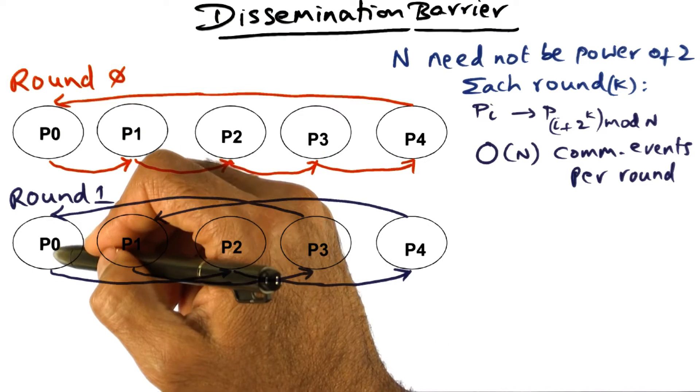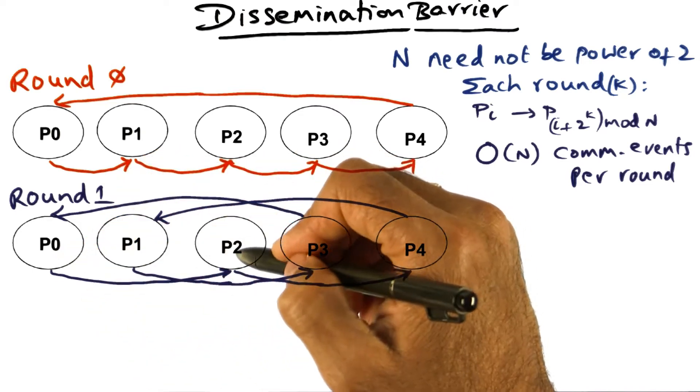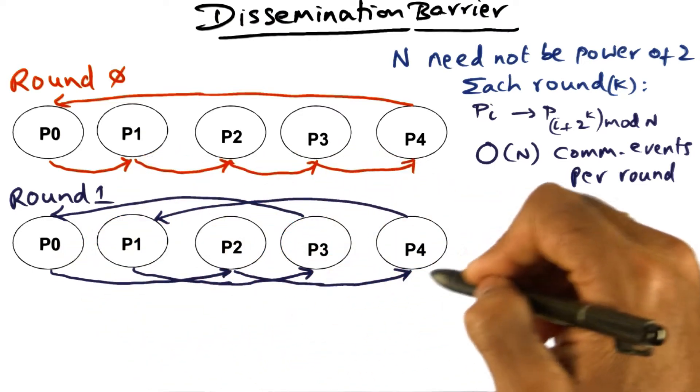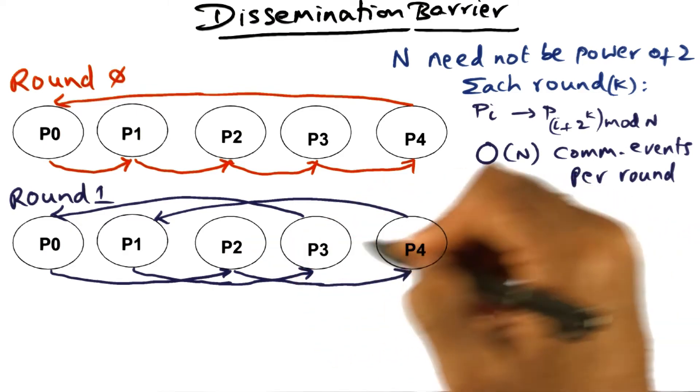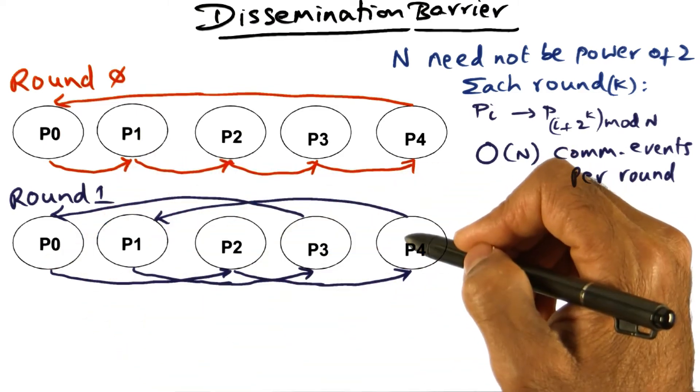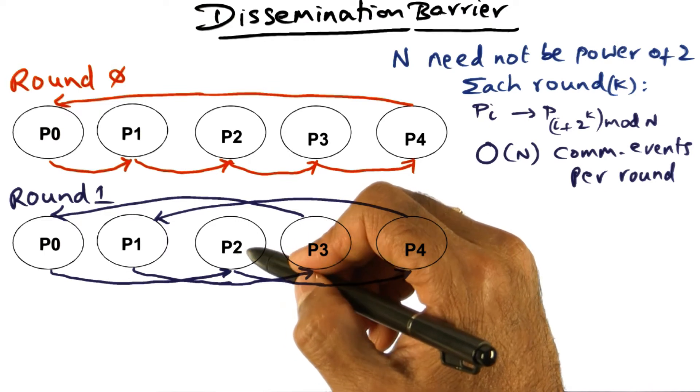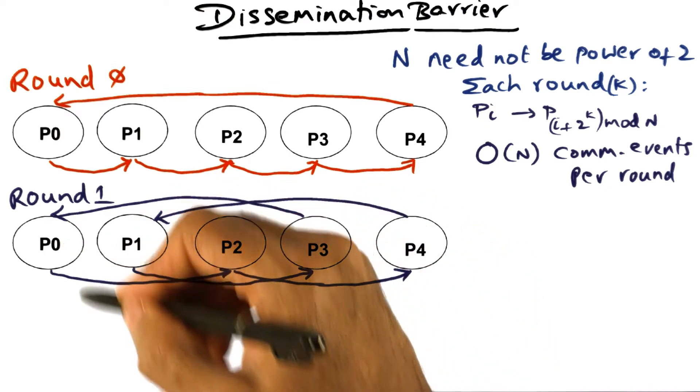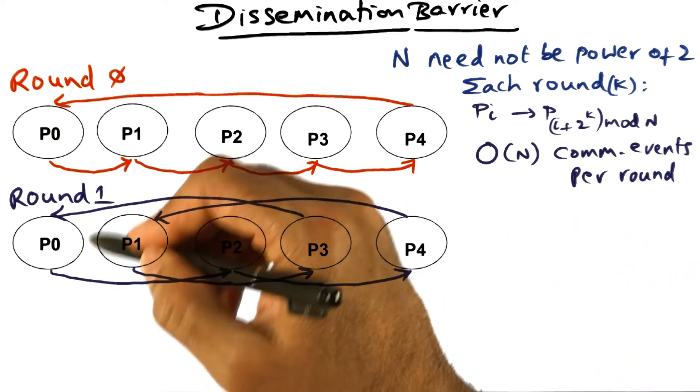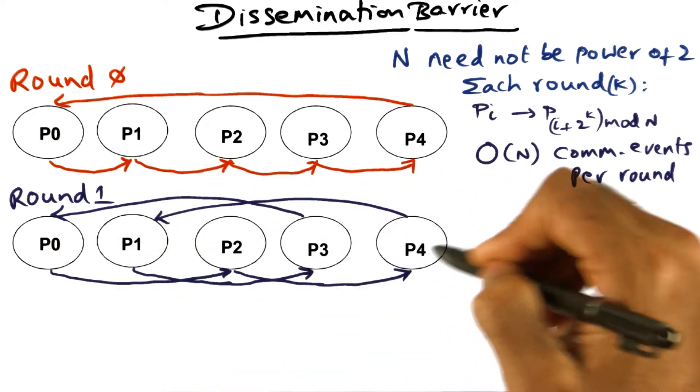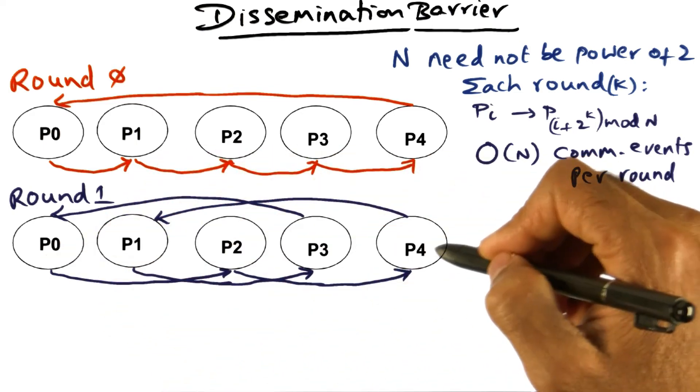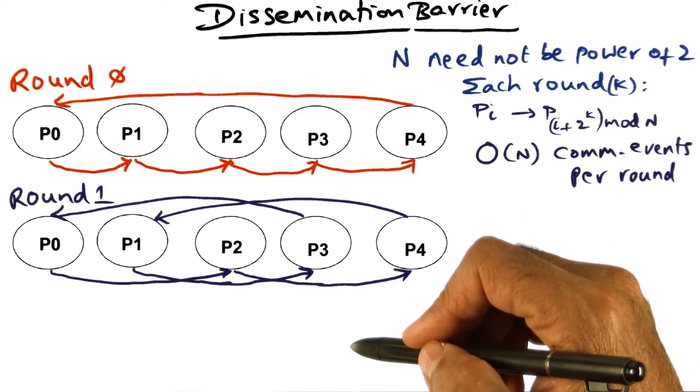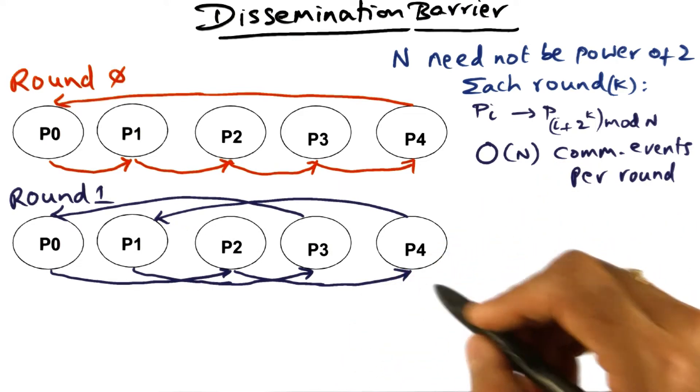So in this case, p2 is going to expect to receive a message from p0, and it has also sent its message to p4, its ordained neighbor to which it is supposed to send a message in this round. Once it is done, p2 knows that round 1 is over, and it can progress to the next round. So the independent decision is being made by each one of these processors in terms of knowing that this particular round is over, and they can progress to the next round of the dissemination barrier.